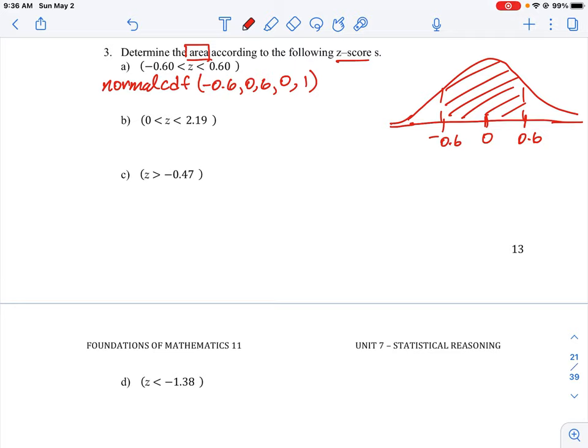So if we run that through you'll get a decimal which is equal to 0.4515 to four spots which is essentially 45% of the area of the curve.